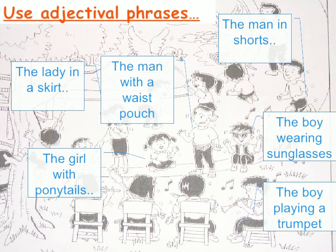Not all girls or objects in the picture are the same, so if you want to talk about any other female, you can use phrases like 'the lady in a skirt.' Similarly, 'the boy playing a trumpet' and 'the boy wearing sunglasses' — this is how you can explain the different people and objects. After explaining all the things and objects in the picture, you need to make sentences using the correct tense.